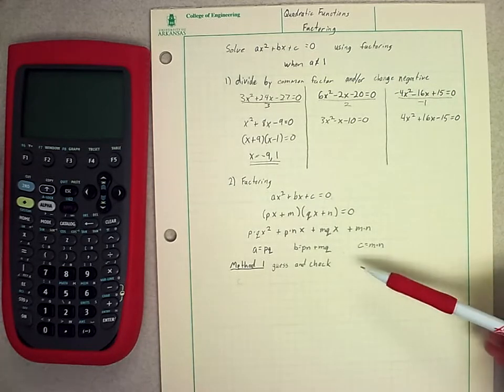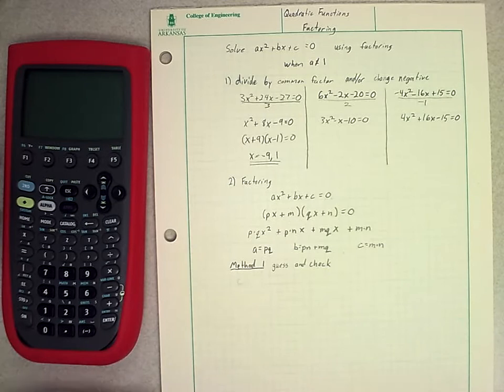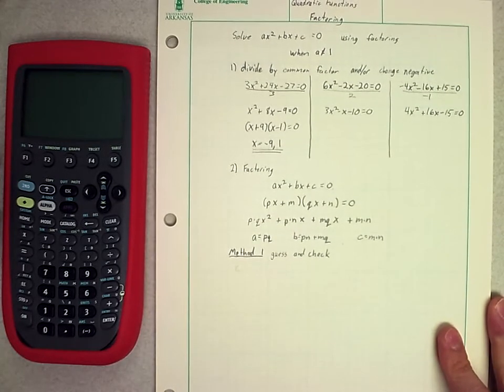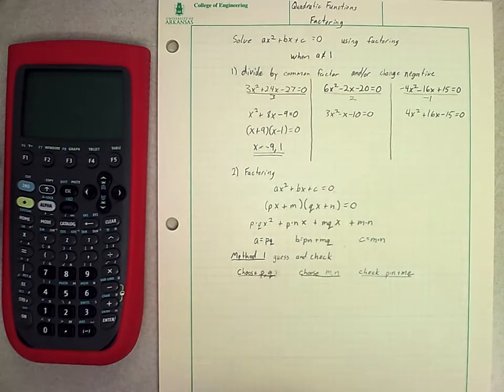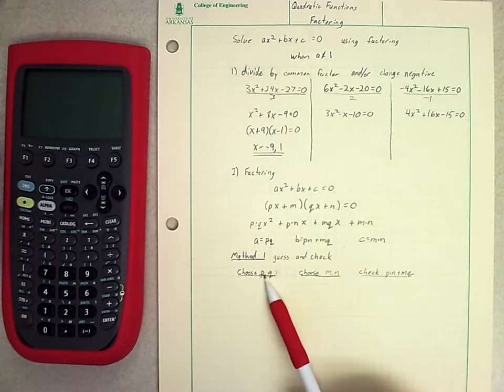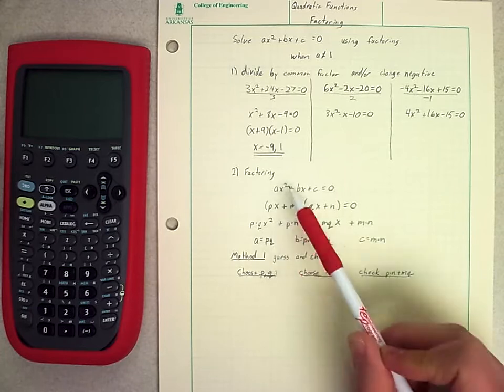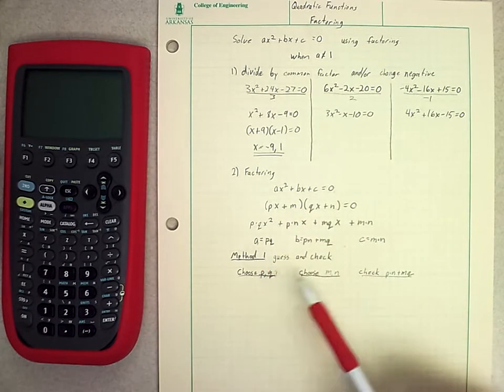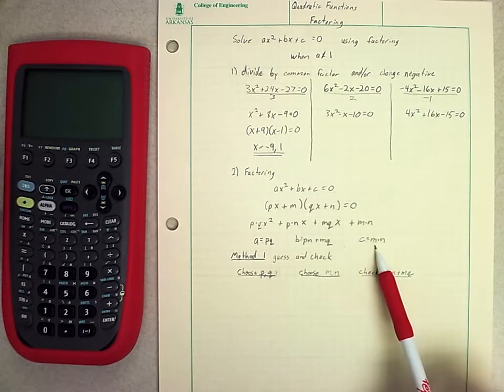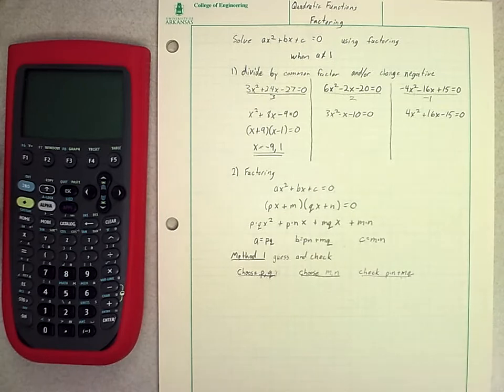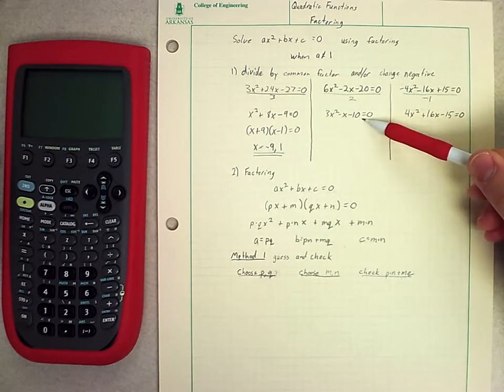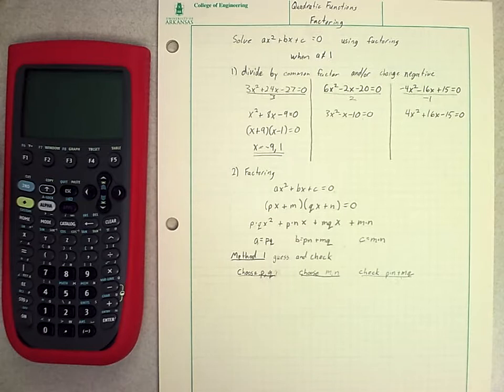The first method we're going to discuss in how to solve these is really what I just call guess and check, which can be a very tedious method but possibly one that you guys learned before. With the guess and check method, there's basically two parts. We're going to choose p and q, different factors that multiply to get us a. Then we'll choose factors of m and n that multiply together to get c. And then we'll just have to check to see whether or not it fits what we have to have for b. So let's look at that with our example, the 3x² - x - 10.